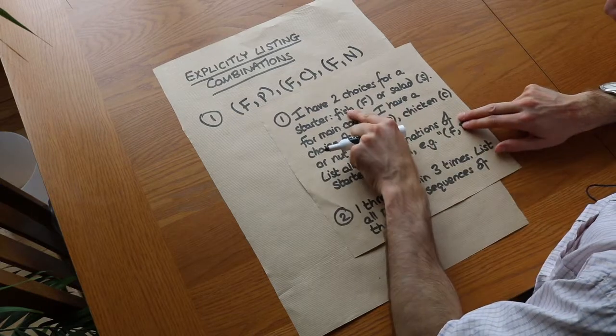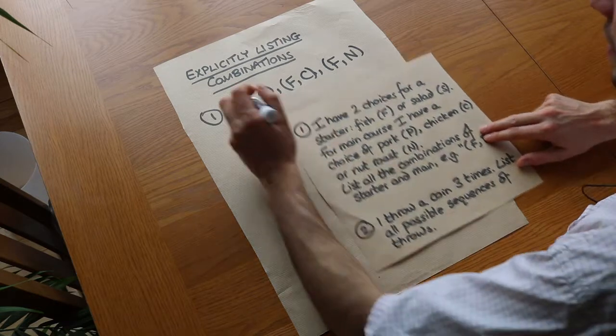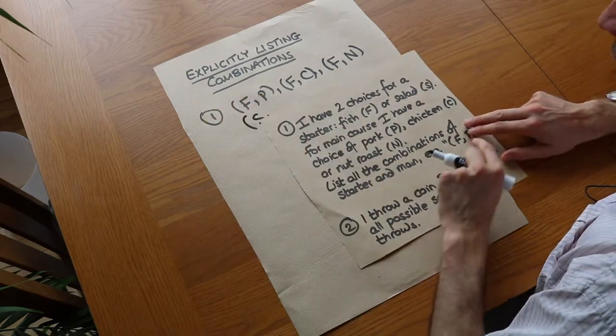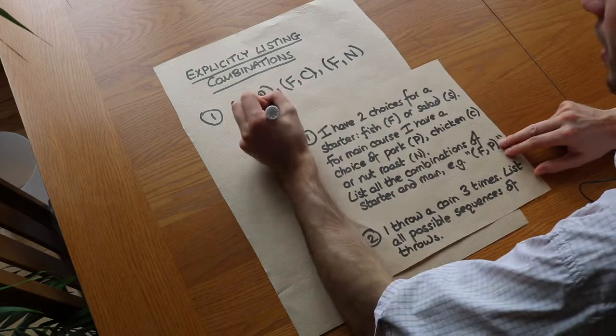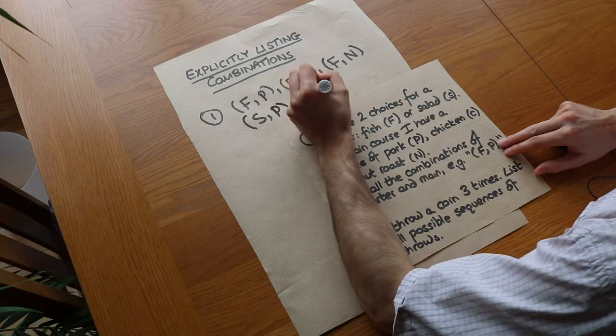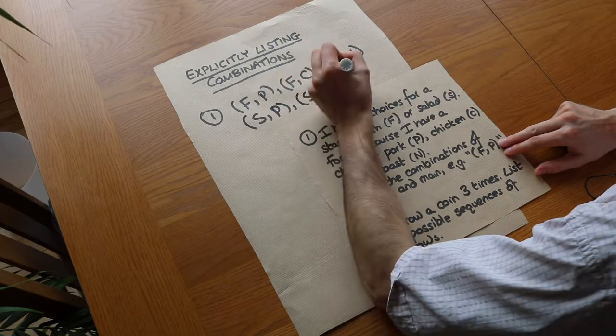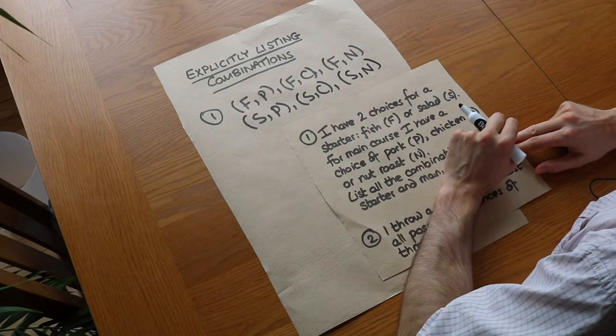And then what's the other choice of starter? I could have salad for starters. So we fix the salad as a starter and then we consider all the different possible choices of main course. So it could be with pork, salad and pork, or it could be salad and chicken, or it could be salad and nut roast. And you can see we've got a really nice order to our possibilities here.